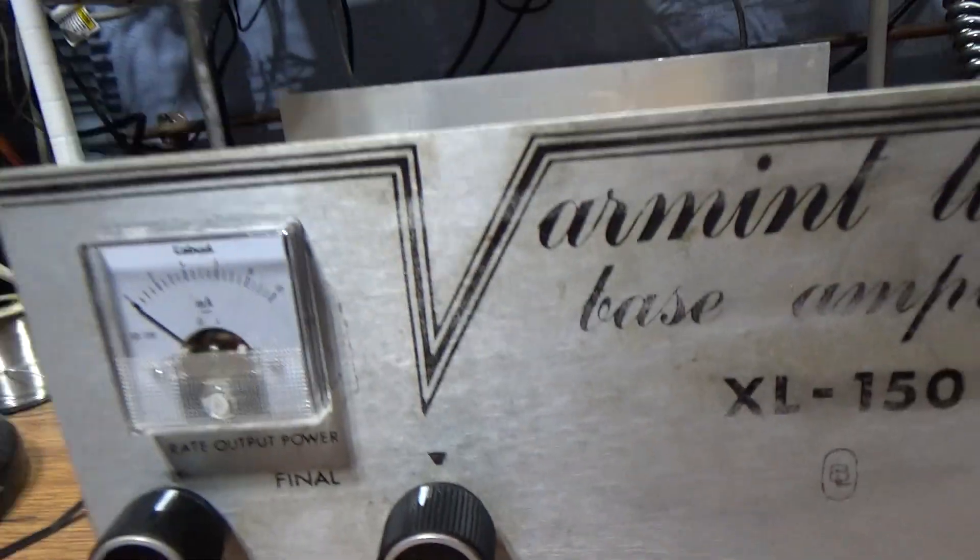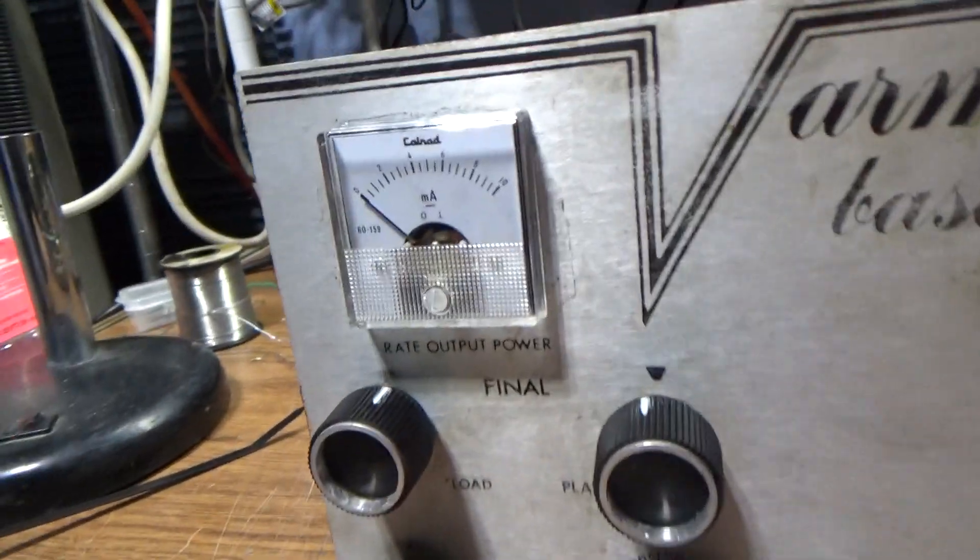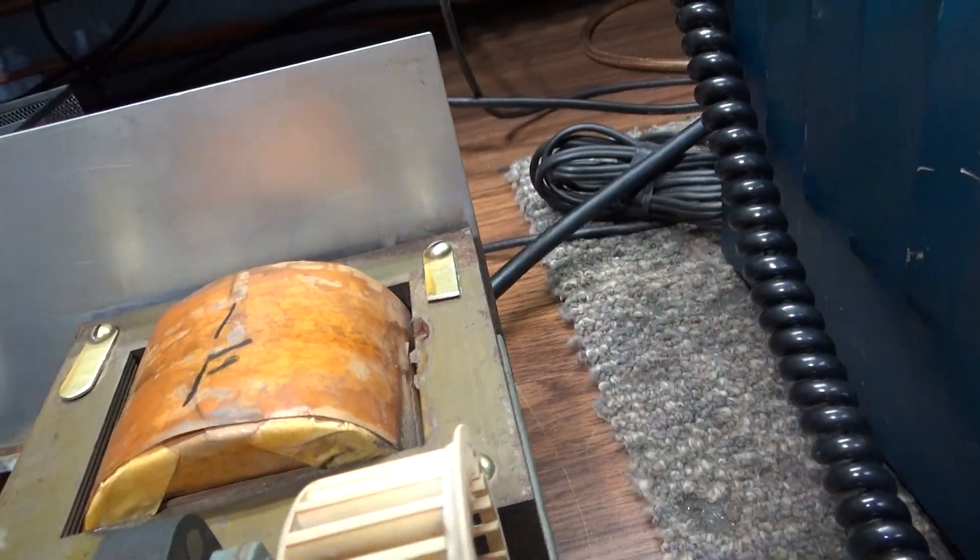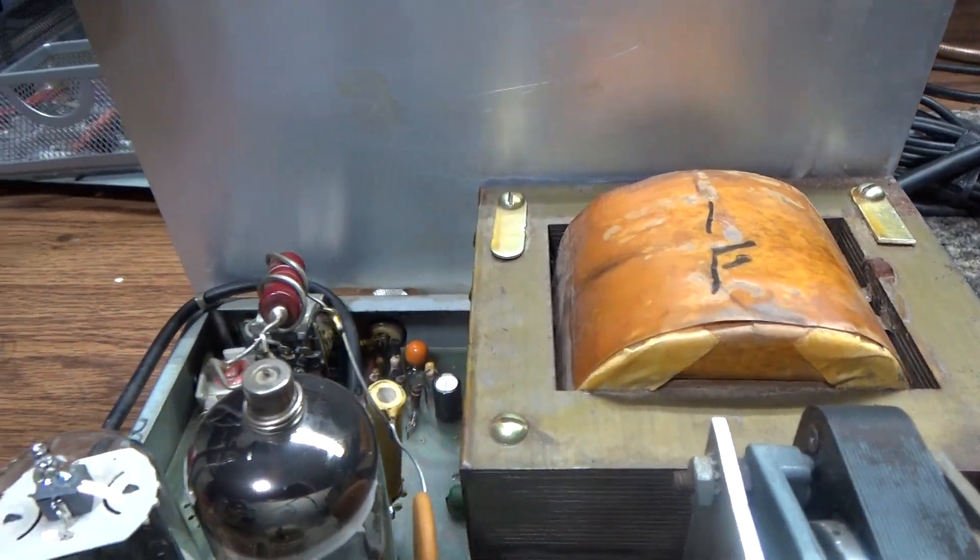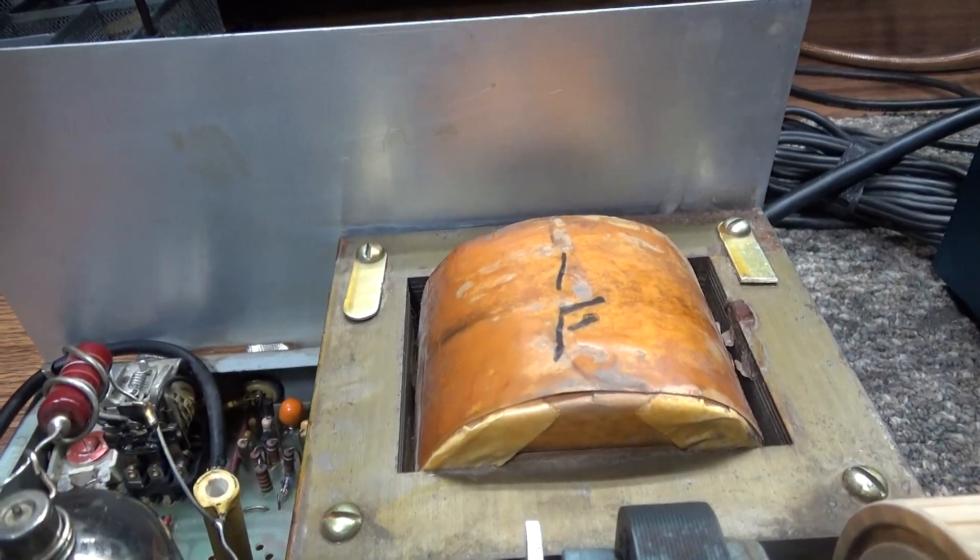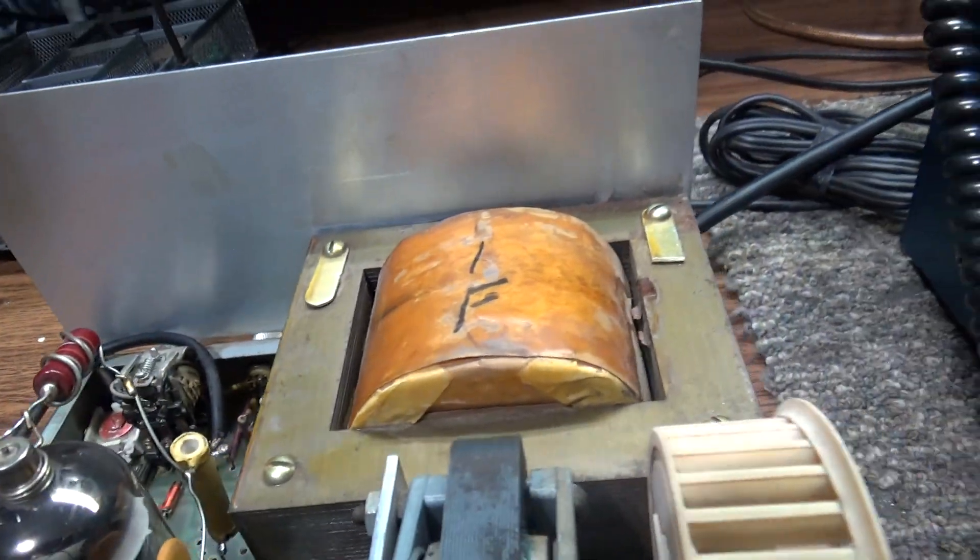You've got a grid meter. They use a blower on these that sucks air through it and out like an air chamber. I guess it keeps the whole amp cool instead of just blowing air on the tubes.